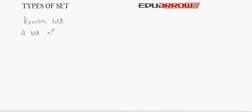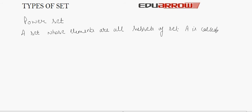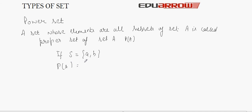Next is the power set. The set of all subsets of set A is called the power set of A, denoted by P(A). For example, if A is a set having elements a and b, then P(A) will be {∅, {a}, {b}, {a, b}}. The power set is noted within curly braces.